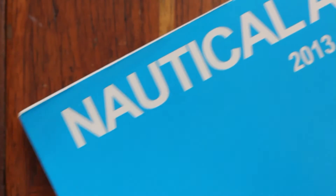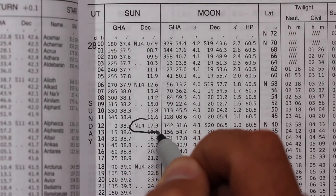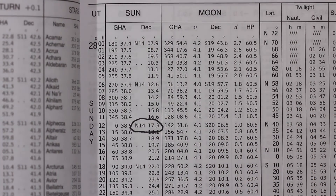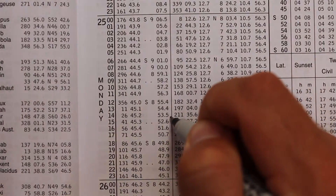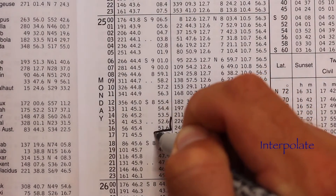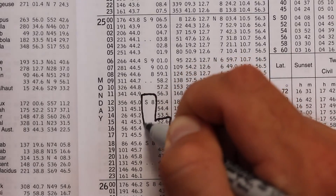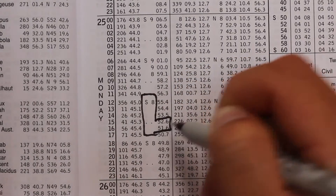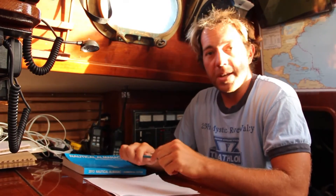Before we get into example problems, we need to take a closer look at the Nautical Almanac. You've already seen how you can pull out a value of declination for a given hour, but typically observations take place between whole-hour measurements. In that case you must interpolate the value of declination. For our purposes it's typically sufficient to estimate declination to the nearest tenth of a minute. Let's look at a couple of example problems.